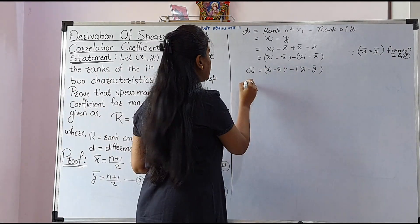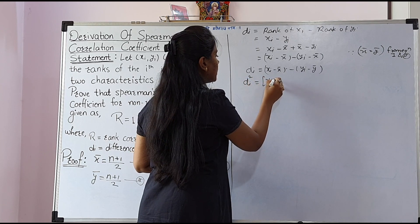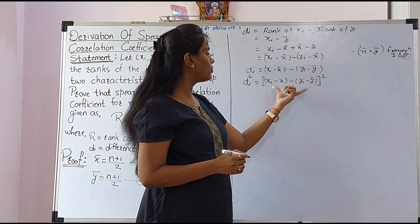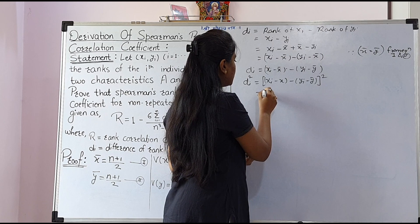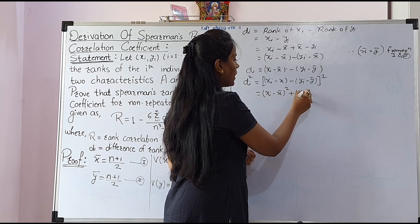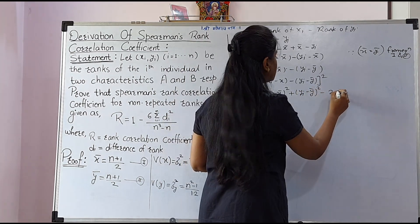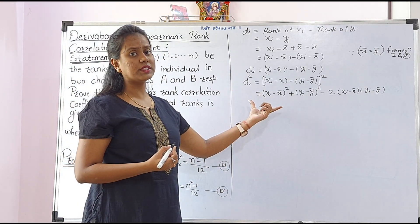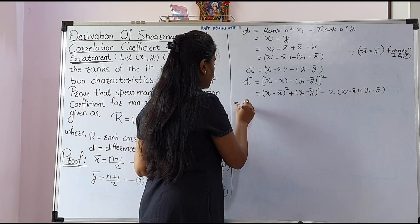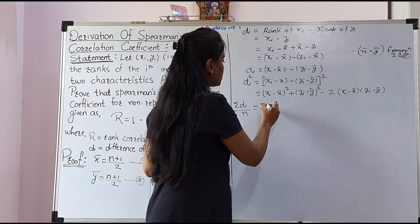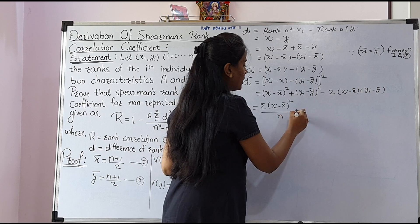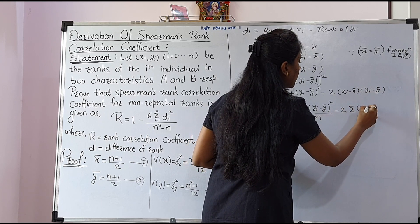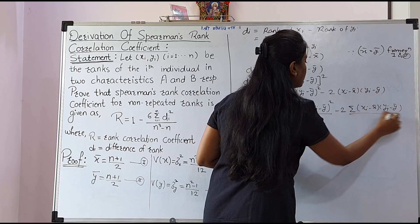Squaring both sides: dᵢ² = [(xᵢ − x̄) − (yᵢ − ȳ)]², which expands as (xᵢ − x̄)² + (yᵢ − ȳ)² − 2(xᵢ − x̄)(yᵢ − ȳ). Taking summation on both sides and dividing by n: Σdᵢ²/n = Σ(xᵢ − x̄)²/n + Σ(yᵢ − ȳ)²/n − 2·Σ(xᵢ − x̄)(yᵢ − ȳ)/n.